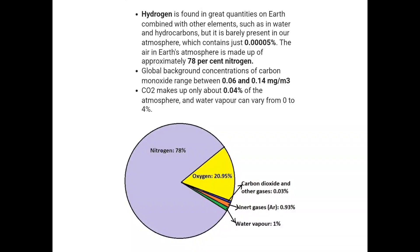Hydrogen is found in great quantities on Earth combined with other elements such as in water and hydrocarbons, but it is barely present in our atmosphere, which contains just 0.005% hydrogen. Earth's atmosphere is made up of approximately 78% nitrogen. The global background concentration of carbon monoxide ranges between 0.06 and 0.14 mg/m³, and CO₂ makes up only about 0.04% of the atmosphere.